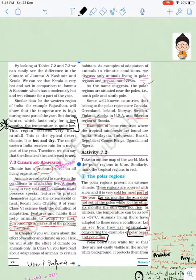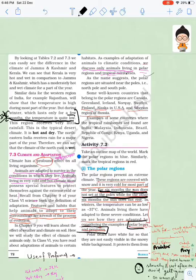Next is climate and adaptation. Adaptation means to adapt to the climate of a place. Climate has a profound effect on living organisms - profound means deep effect. Climate has a deep effect on organisms living at a place. For example, animals - here basically we'll study about animals in two regions: polar regions and tropical regions.